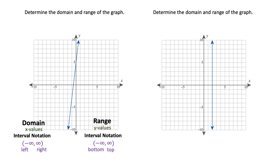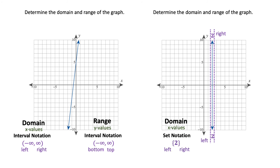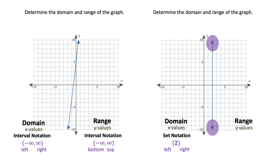Let's look at the second graph — this is a vertical line, so it's a little different. For the domain, think about just x values; there's really only one x value. It doesn't go past two in a leftward direction and neither does it go past two in a rightward direction. So instead of an interval, you use set notation with braces to indicate there's only one value, which is two — the domain is {2}. For the range, the arrows point up and down: the bottom arrow approaches negative infinity and the top arrow approaches positive infinity, so the range is negative infinity to positive infinity, or all real numbers.